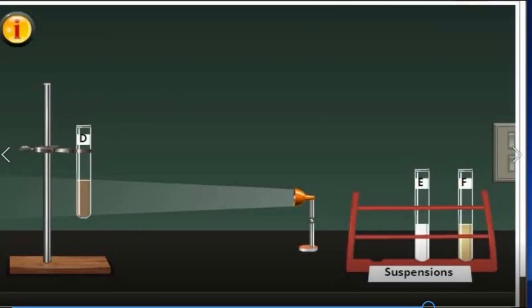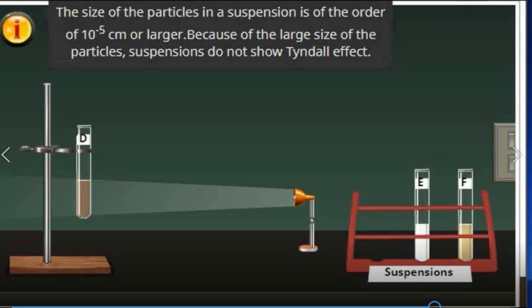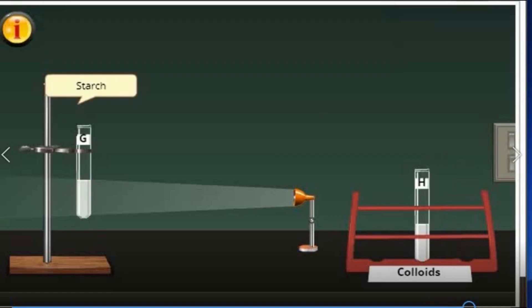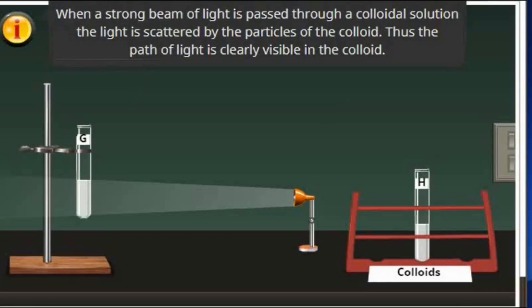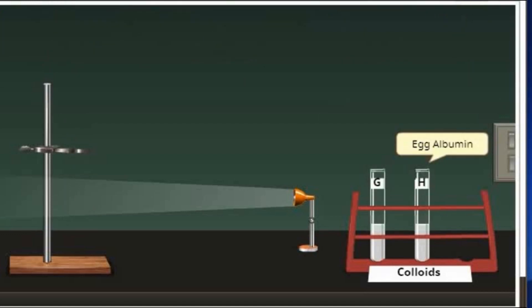How about suspension? Mixture D, E, and F did not show Tyndall effect. This is because the size of the particles in a suspension is of the order of 10 raised to the negative 5 cm or larger. Because of the large size of the particles, suspensions do not show Tyndall effect. The colloidal of starch and water, and also mixture H — the colloidal of egg albumin and water — showed Tyndall effects. This is because when a strong beam of light is passed through a colloidal solution, the light is scattered by the particles of the colloid. Thus, the path of light is clearly visible in colloid.